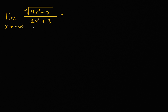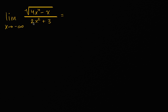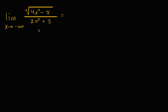Whenever we're trying to find limits at either positive or negative infinity of rational expressions like this, it's useful to look at what is the highest degree term in the numerator and in the denominator, and then divide the numerator and the denominator by x to that degree. Because if we do that, we're going to end up with some constants and some other things that will go to zero as we approach positive or negative infinity, and we should be able to find this limit.